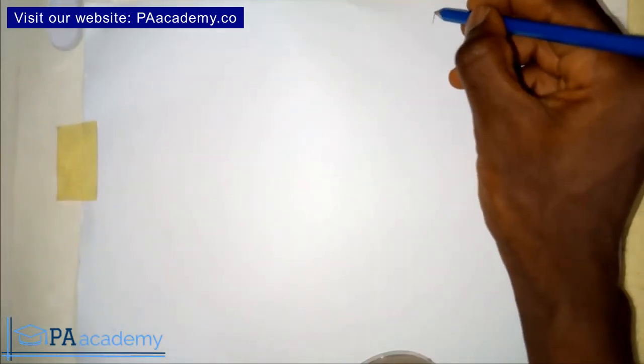Hello everyone and welcome to PA Academy. In this video I'm going to be showing you the auxiliary method of drawing an ellipse. If you are asked to draw an ellipse using the auxiliary method — this is example two. If you watched example one, welcome back. If you are just coming across this part two, don't worry. We are using the auxiliary circle method.